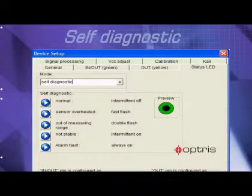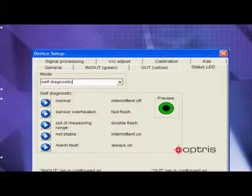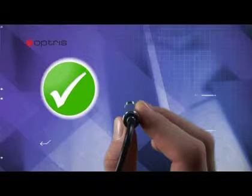In the self-diagnostic mode, the LED is indicating 5 different conditions of the sensor. Once activated in the software, you will get a fast and reliable feedback of the sensor conditions. An intermittent LED tells you everything is working well.